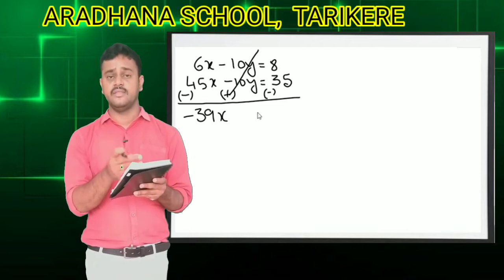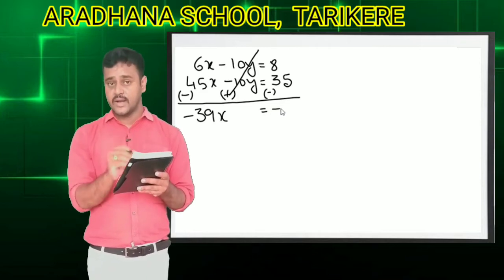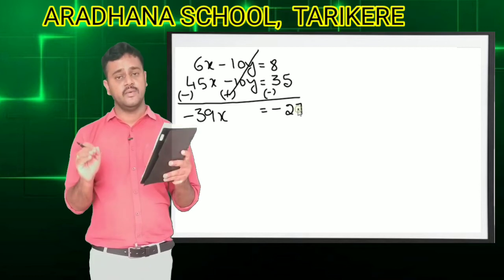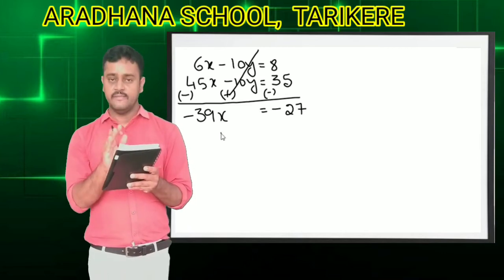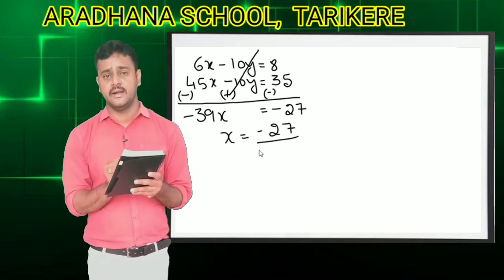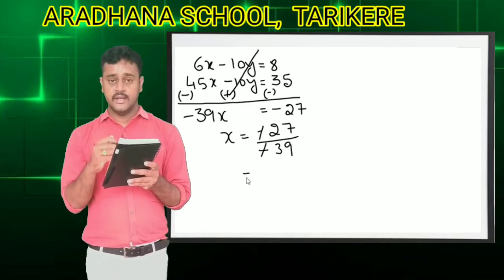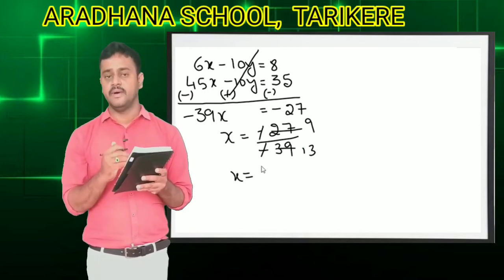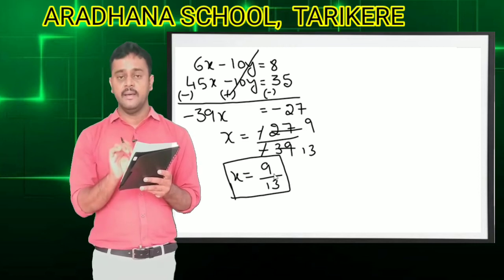The right-hand side: 8 minus 35 — the greater number is 35 with symbol minus — gives minus 27. So minus 39x is equal to minus 27. So x is equal to minus 27 divided by minus 39. Both are minus, so it becomes plus. 9 times 3 is 27, and 13 times 3 is 39. So the value of x is 9 by 13. We cannot simplify further, so the value of x is 9 by 13.